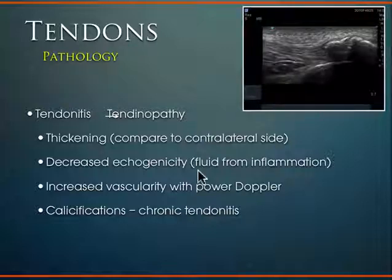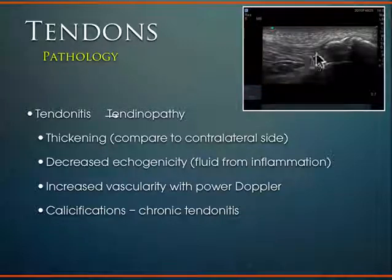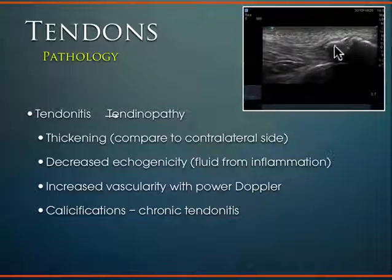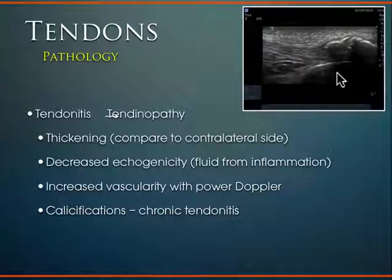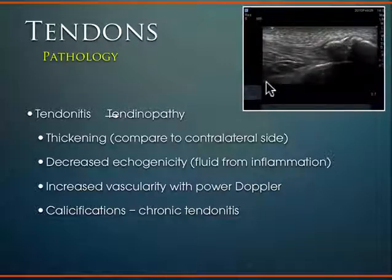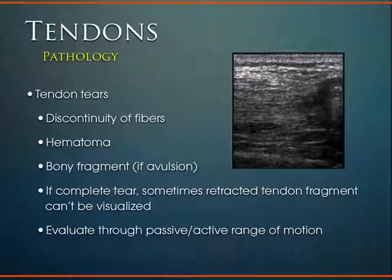We also hear about calcific tendonitis, typically in the shoulder rotator cuff muscles. The calcific changes you can see tend to be very thick hyperechoic structures. These are calcific changes within the tendon architecture, and just like bone, you're going to get a lot of deep shadowing below that very hyperechoic thick tissue because the sound waves don't penetrate through. You see nice normal tendon tissue coming across and then this calcific change — a nice example of pathology you can see.